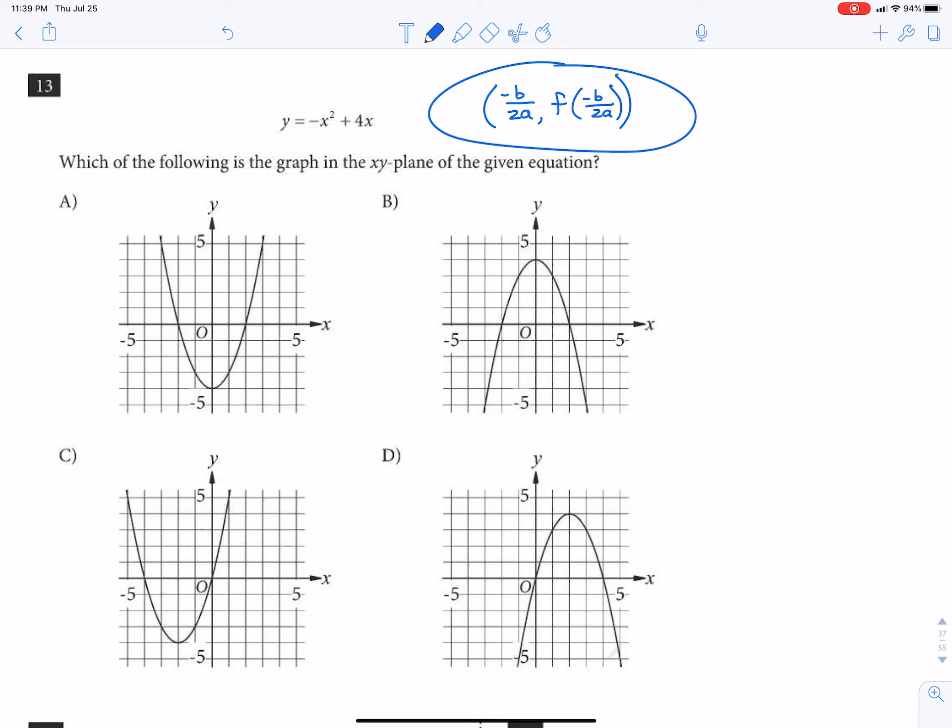If you do, then it would just be negative 4 over 2 times negative 1, which would be positive 2. So then we know that our vertex would be at 2.